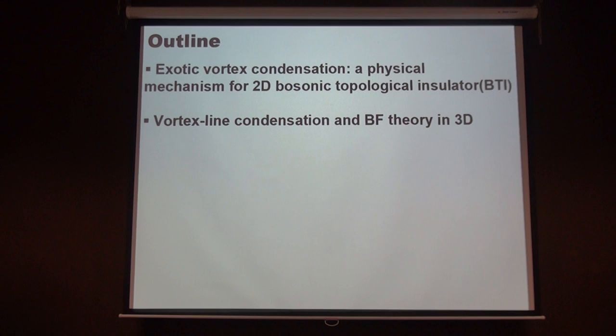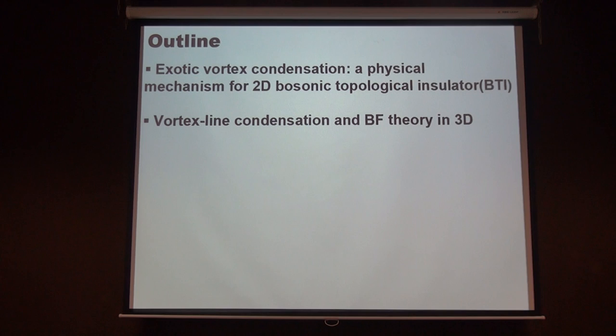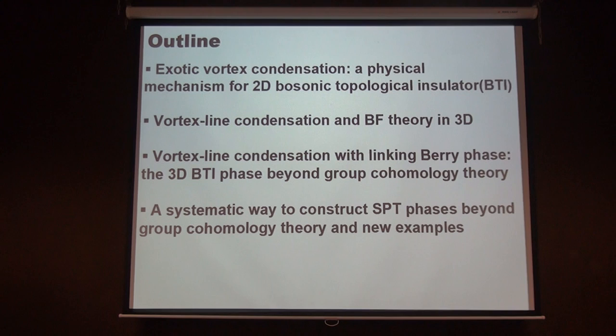The key feature is that when we consider vortex condensation, we naturally end up with something like a BF theory in 3D. We propose to use such a theory to describe the Mott-insulating phase in 3D. Then, considering a non-trivial linking Berry phase for vortex line condensation, we can develop a theory generalizing BF theory and propose it to describe BTI phases beyond group cohomology theory. Finally, I try to propose a systematic way to classify SPT phases beyond group cohomology and provide new examples. There is also a summary at the end.